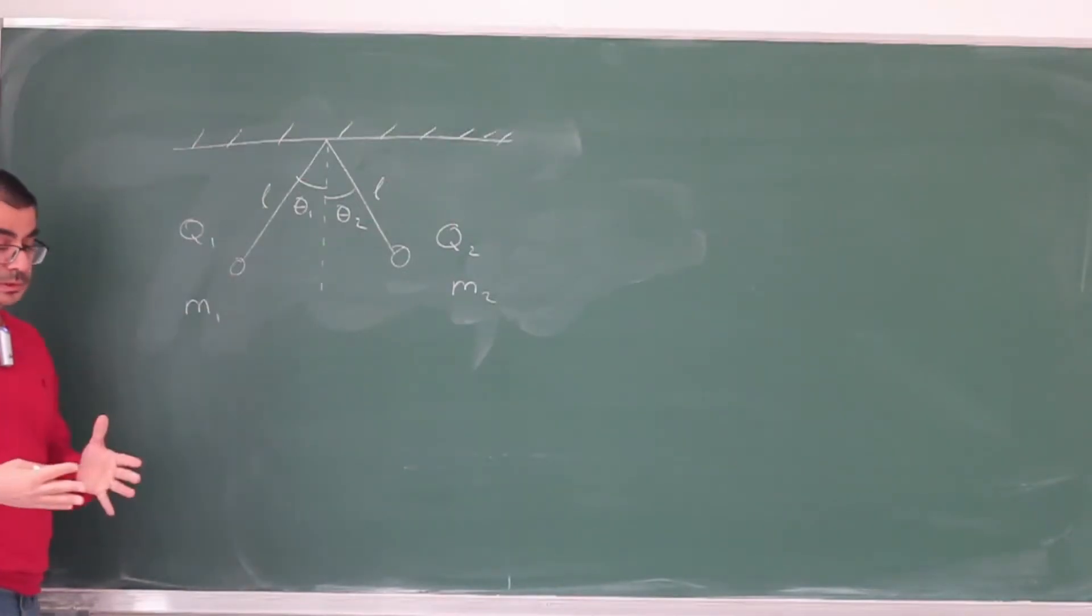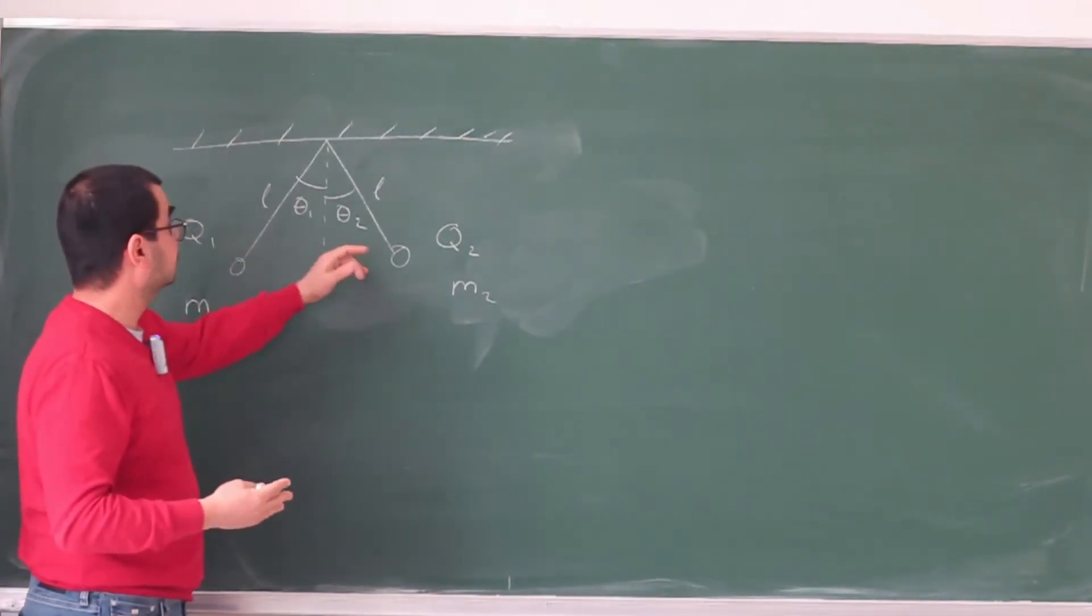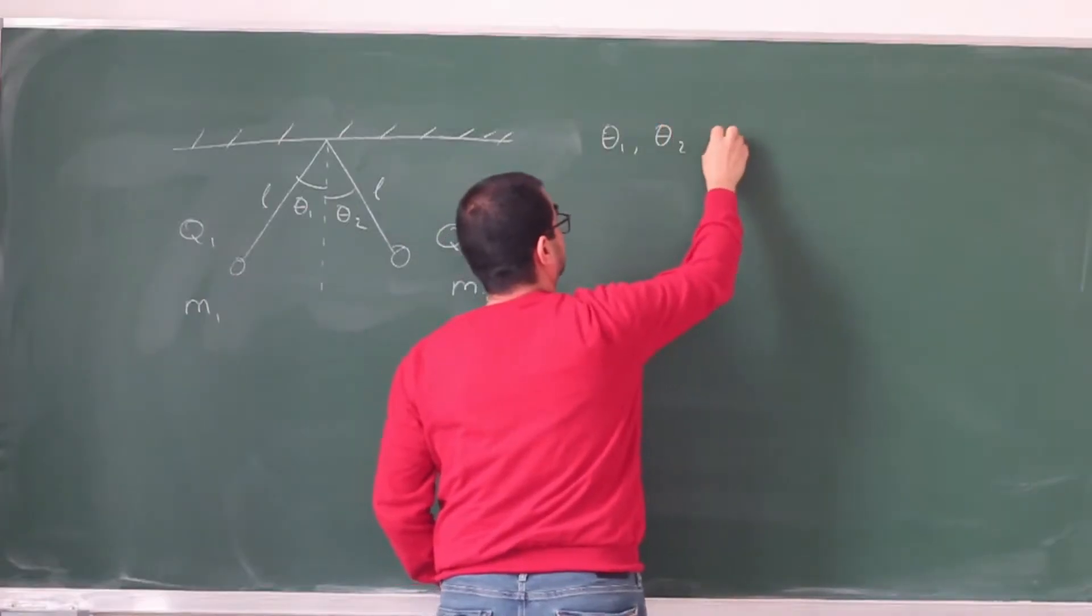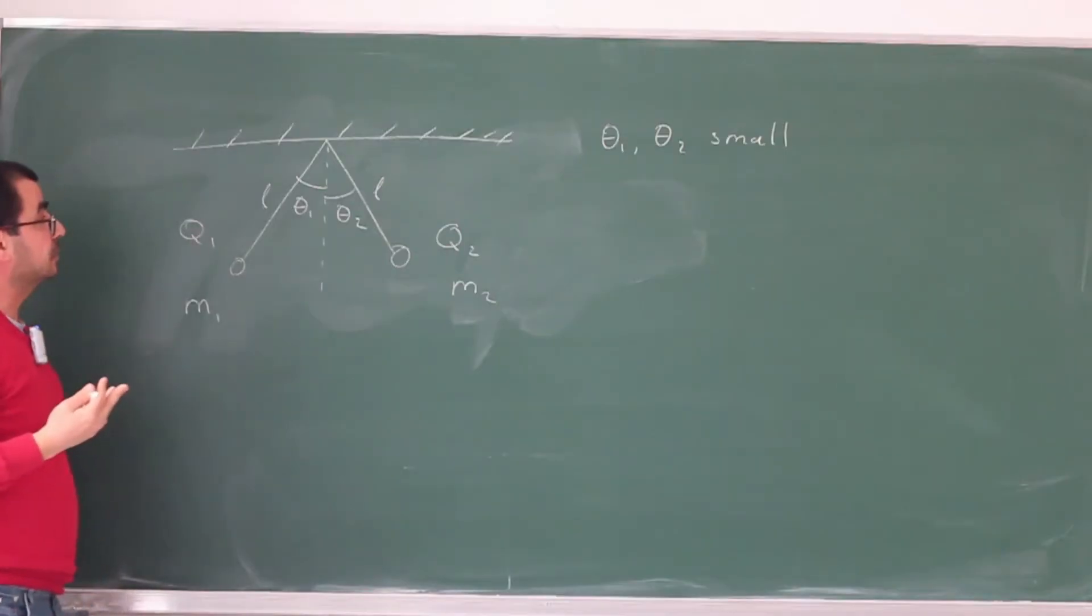Now here, when you first read the problem, you might have noticed that they are mentioning that these theta1 and theta2 are small. Perhaps you did not notice this, I didn't notice the significance of that at the first reading, but when you try to solve the problem, it turns out that this is actually something very important. So these are small angles, and as such, we can actually use the so-called small angle approximations. Now what are these?